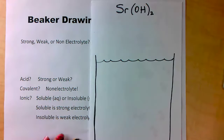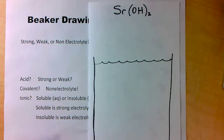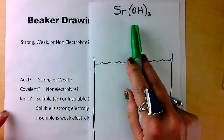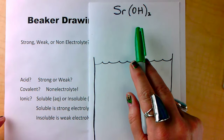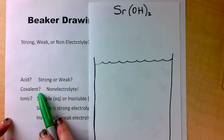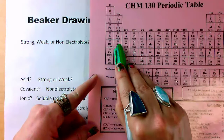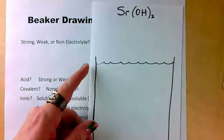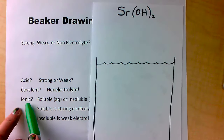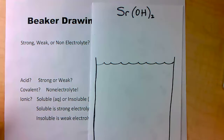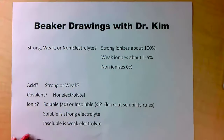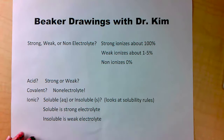Let's try Sr(OH)₂ — strontium hydroxide. Is it an acid? It doesn't have an H in front, so no. Is it covalent? Covalent means nonmetals only, but strontium is an alkaline earth metal in the second column, so we have a metal — it's not covalent. Is it ionic? We have a metal and a nonmetal group, so yes, it is ionic.